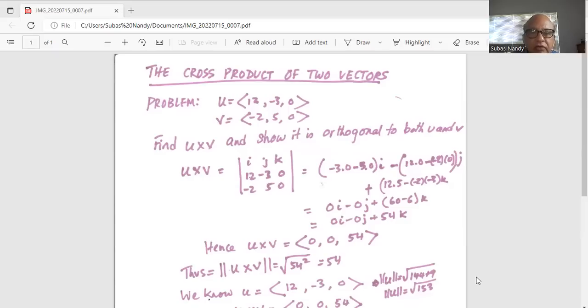So u cross v, we write i, j, and k in the top row, and then u cross v, so we write the directional numbers of u in the second row, 12, minus 3, and 0, and directional numbers of v in the third row, minus 2, 5, and 0.